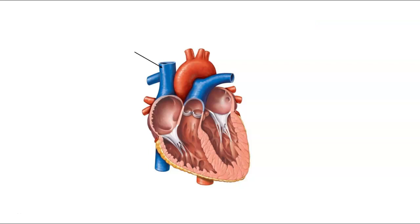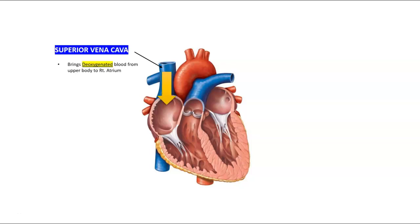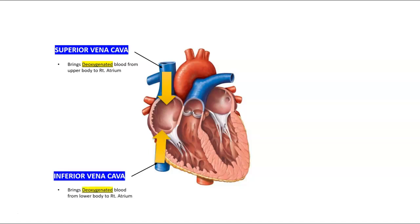Blood enters the heart from the upper body via the superior vena cava, which brings deoxygenated blood from the upper half of the body into the right atrium. The lower half of the body brings blood via the inferior vena cava into the right atrium.